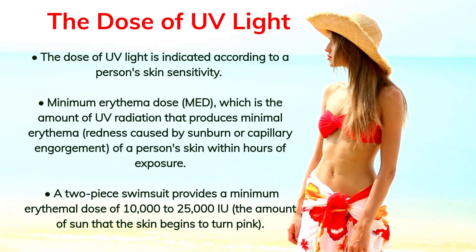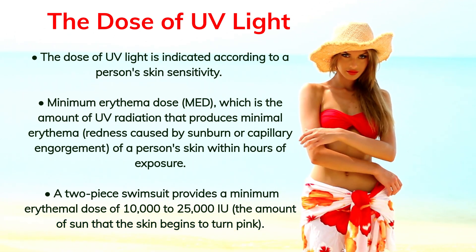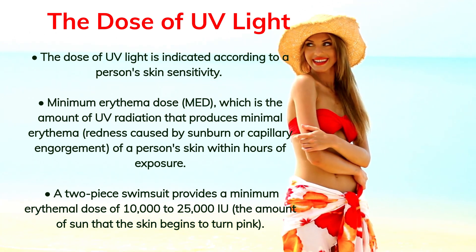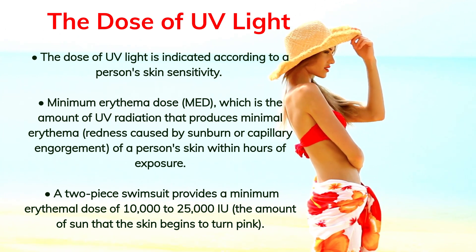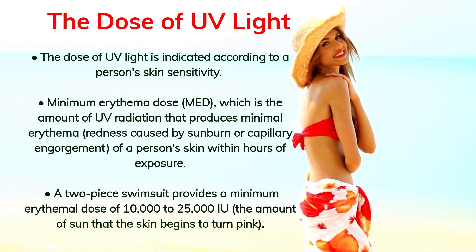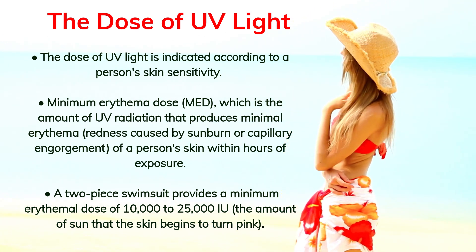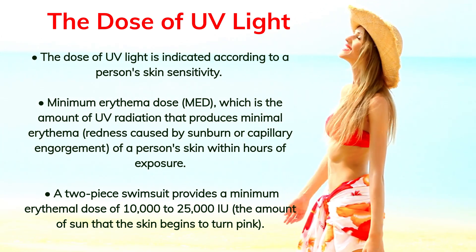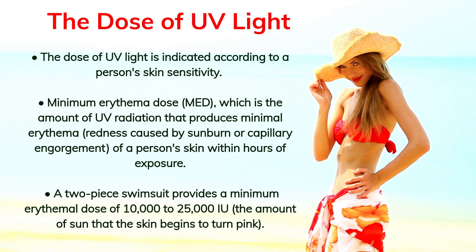What is the dose of UV light? The dose of UV light is indicated according to a person's skin sensitivity. Minimum erythema dose (MED) is the amount of UV radiation that produces minimal erythema — redness caused by sunburn or capillary engorgement — within hours of exposure. A two-piece swimsuit provides a minimum erythema dose of 10,000 to 25,000 IU, the amount of sun at which the skin begins to turn pink.